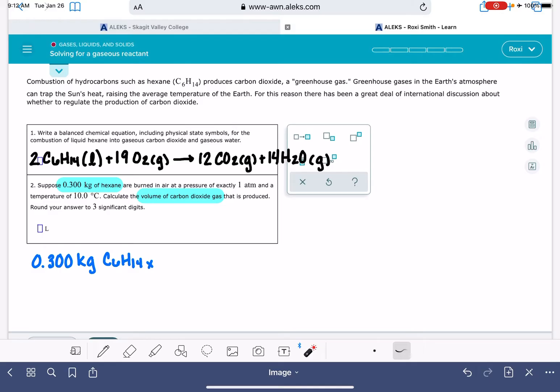In order to convert from hexane to carbon dioxide gas, we need to do a multiple conversion. So our first step is going to be converting this hexane C6H14 into moles. Before we can convert into moles, we have to get rid of the kilogram units and convert into grams. Kilo is the prefix for 10 to the 3. So there's 1,000 grams in a kilogram. That'll get rid of our kilogram units.